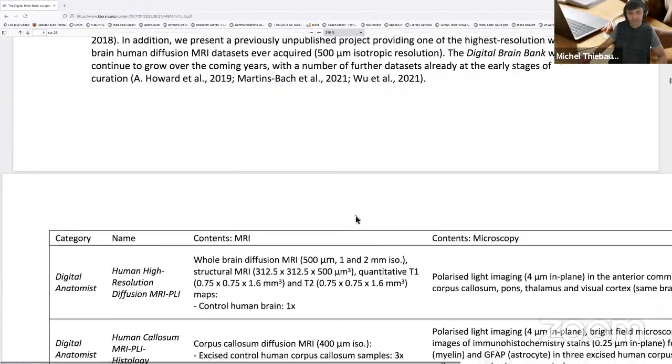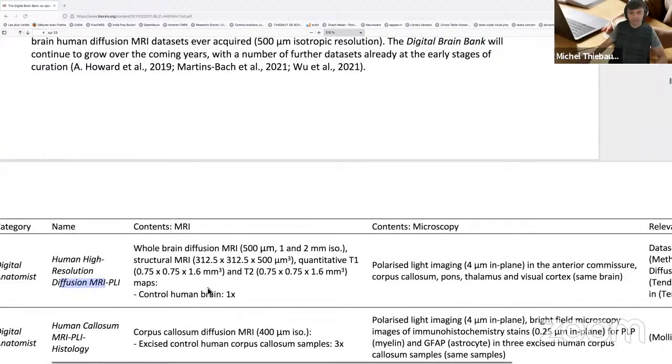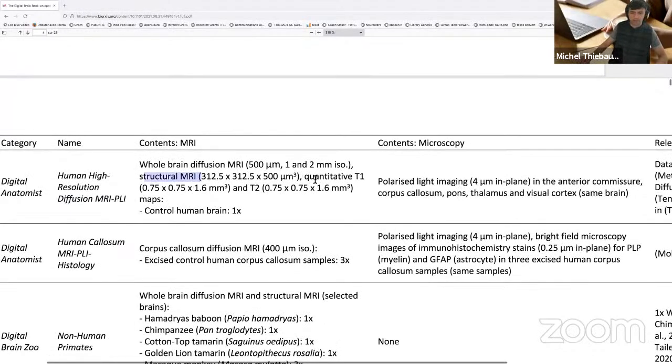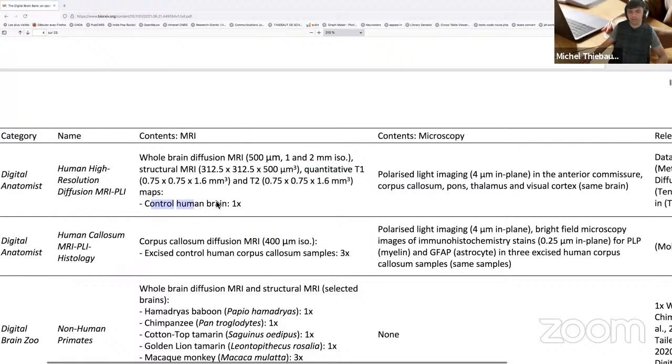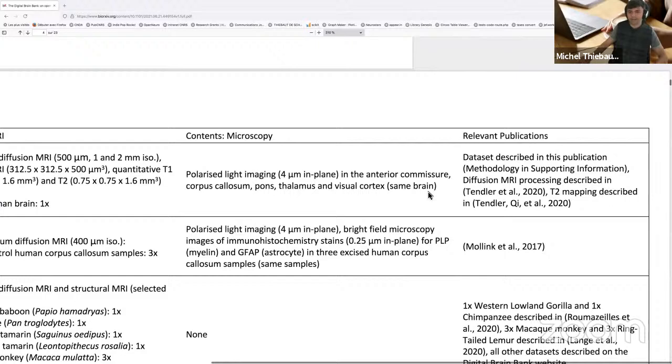This database includes high resolution human diffusion MRI and polarized light imaging of different brain structures. The diffusion weighted imaging of the human is a whole brain. It means 500 microns, one and two millimeter, two millimeters combined with structural MRI and quantitative T1 and T2 maps. This is just a normal human brain. On the side of that you also have some polarized light imaging of the entire commissure, the corpus callosum, the pons, the thalamus and the visual cortex in the same brain, and these might have been previously published as you can see here.